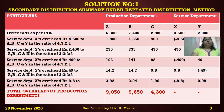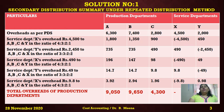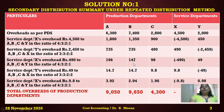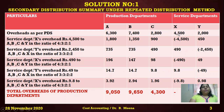The solution: put the heading as usual — 'Secondary Distribution Summary under Repeated Distribution Method.' The columns to open are: Particulars, Production Departments (A, B, C), and Service Departments (X, Y). There is no need for a total column. The first row is 'Overheads as per PDS': 6,300 for A, 7,400 for B, 2,800 for C, 4,500 for X, and 2,000 for Y.